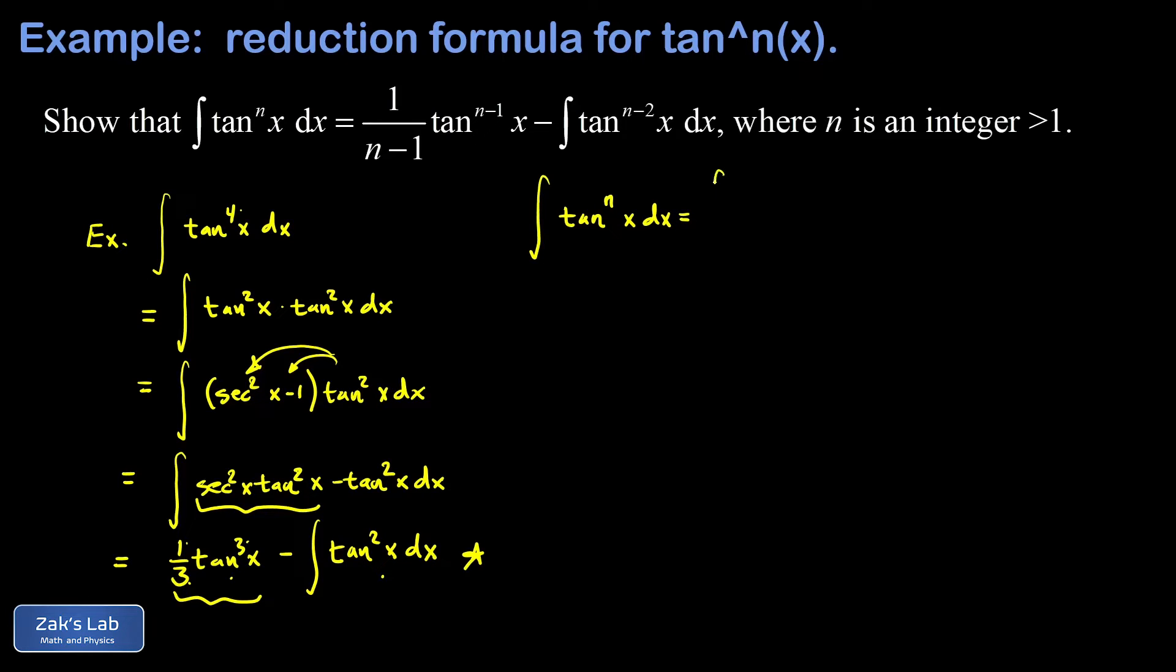What do I do to solve powers of the tangent function? I split off a tangent squared with the intent of using this Pythagorean identity. What I'm left with is a tangent to the n minus two power. And then I apply that identity and I get secant squared x minus one tangent to the n minus two of x dx.